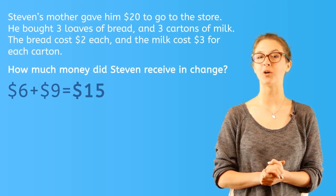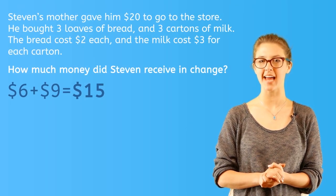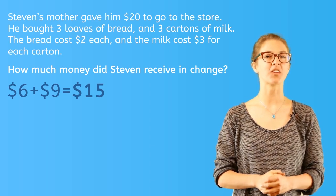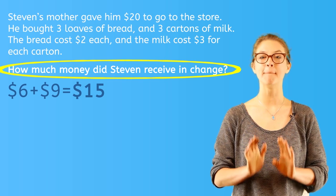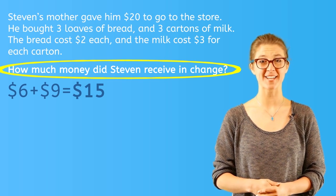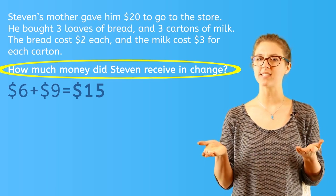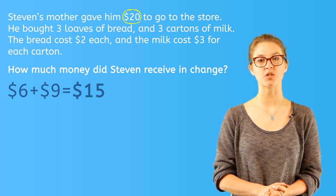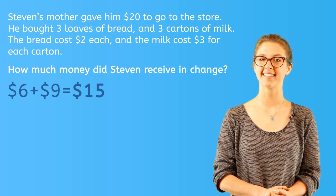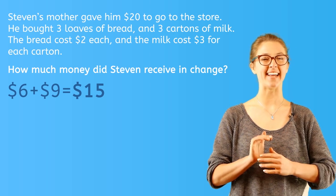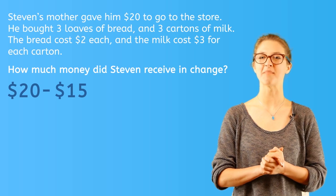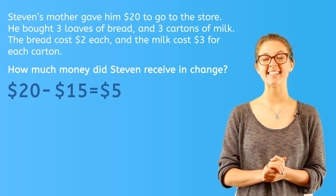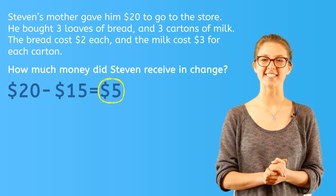Great! We broke this multi-step problem into smaller steps, but we still have one more step. Remember that the question asks, how much money did Stephen receive in change? Well, since his mother gave him $20, we need to subtract the total purchase from $20. That's right! So, $20 minus $15 equals $5. Stephen received $5 in change.